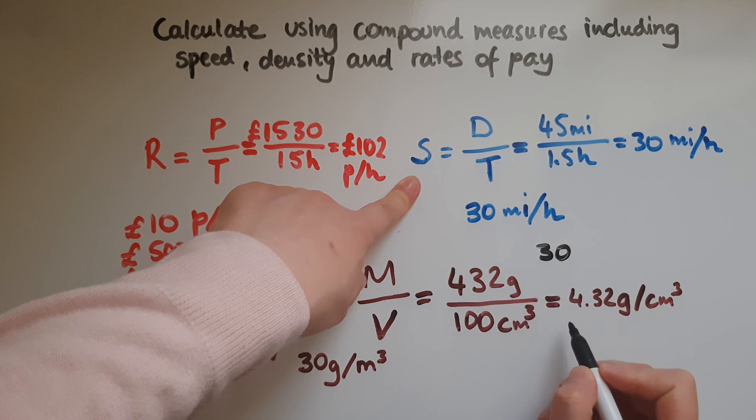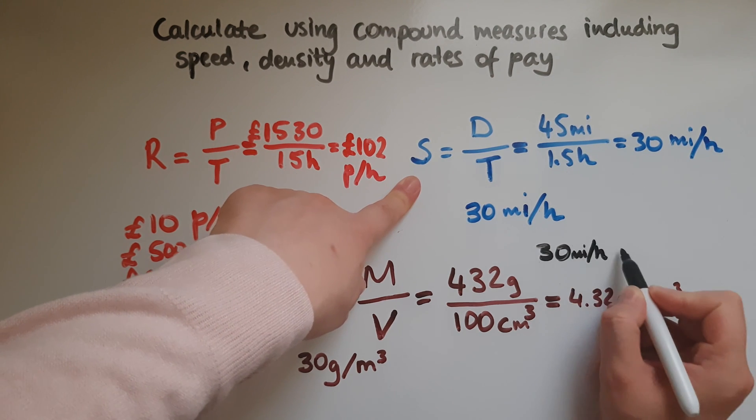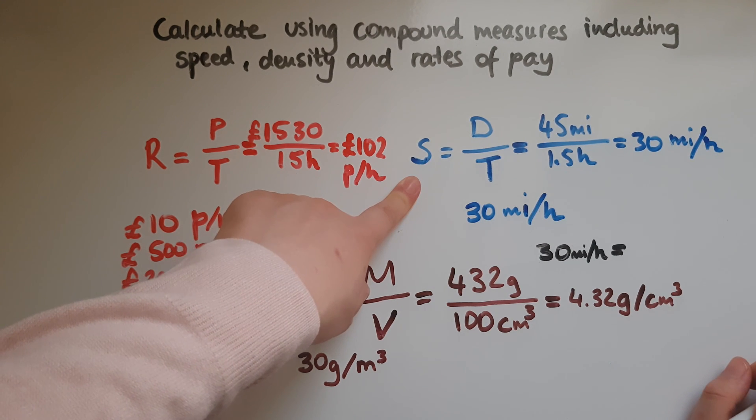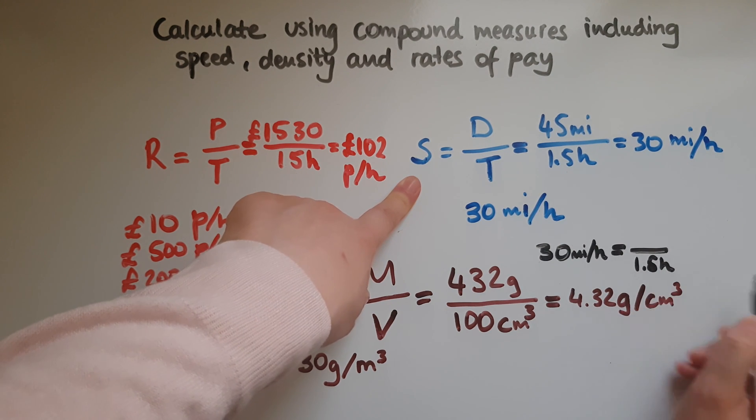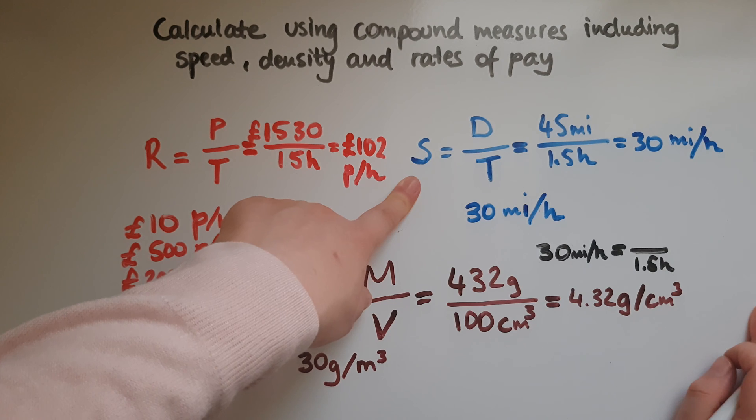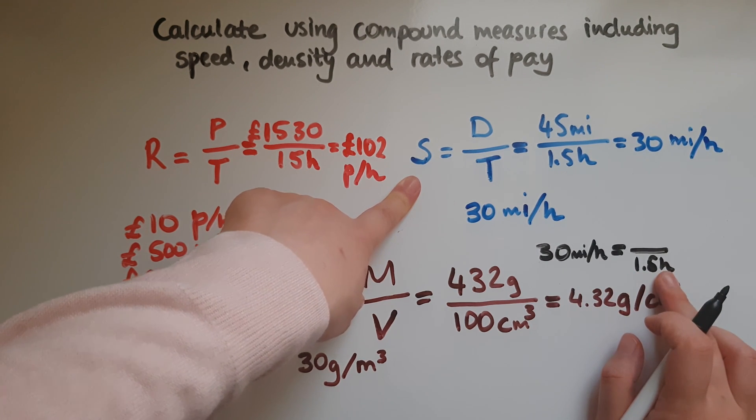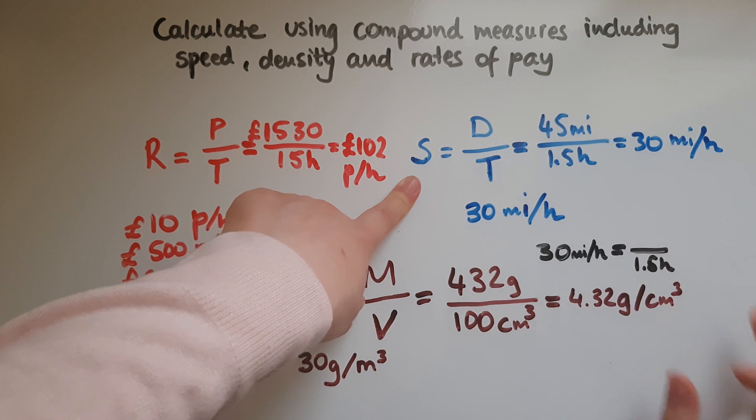So that is 30 miles per hour. And you're also given that the time that it takes the car to travel is maybe 1.5 hours. So that is the speed and that's how long the car has travelled for. Now can you work out the distance?